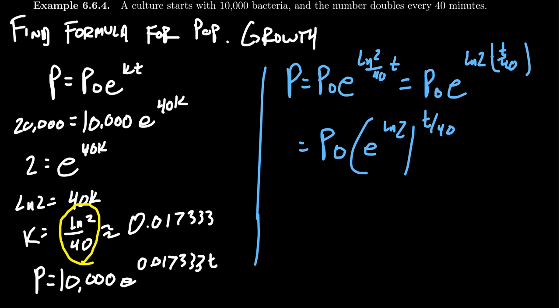And so what you're going to notice is that e to the natural log of 2, these are inverse operations. The natural log of 2 is the power of e that gives you 2. If I raise e to that power, that gives you 2. This is going to equal 2. And so this then simplifies to be P equals P₀ times 2 to the t over 40.